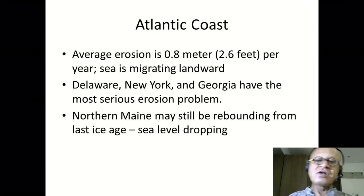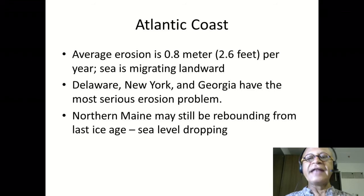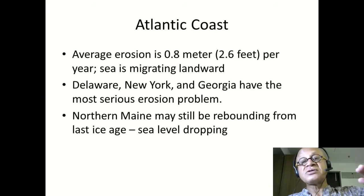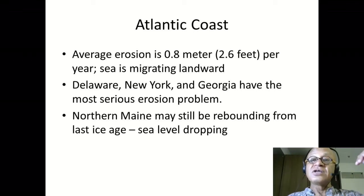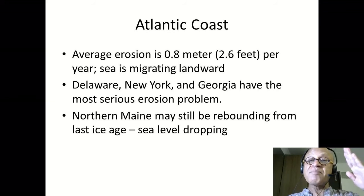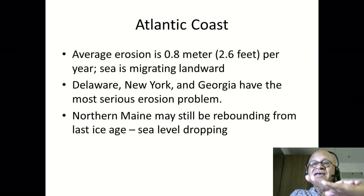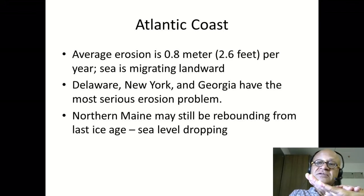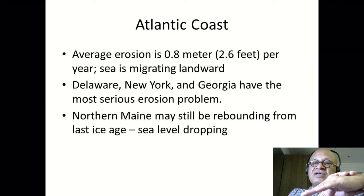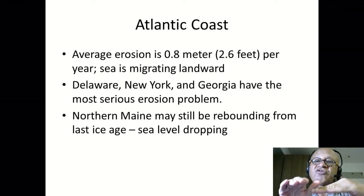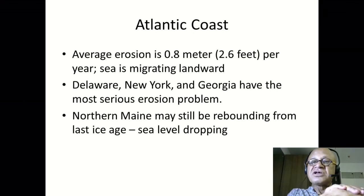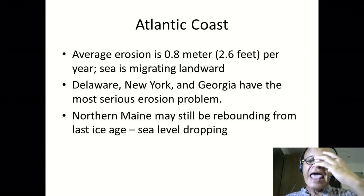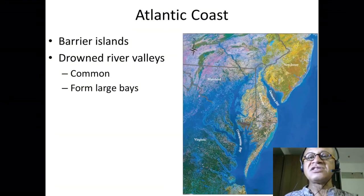The sea is migrating inward, landward. Delaware, New York, and Georgia have a serious erosional problem. The land that was under the glacier during the Ice Age is rebounding, which means the land ahead of it — down to Florida, the Gulf of Mexico — is subsiding, because it was pushed up before. When the glacier was on Maine, Maine was sinking, but the land from New York down to Florida and the Gulf Coast would have risen. So now Maine is rising and the other land is subsiding, which means sea level with respect to land is increasing south of Maryland but decreasing around Maine. So global warming has to account for land movement and isostatic adjustments as well.